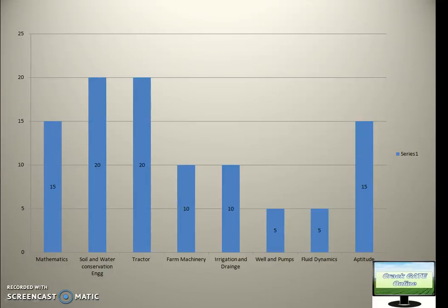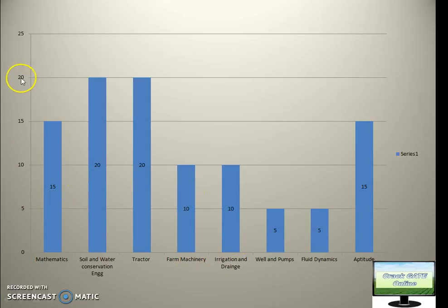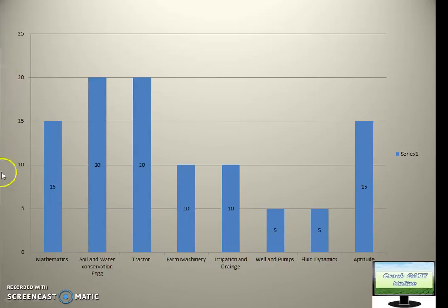From this slide you can see the various subjects and their approximate percentage of marks. The Y-axis shows approximately how many marks each subject carries. This is an approximate figure — you cannot completely rely on this chart.